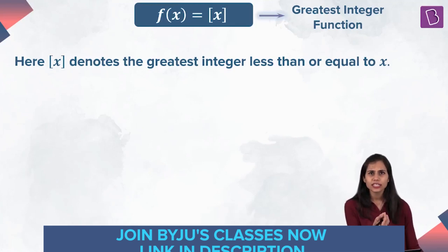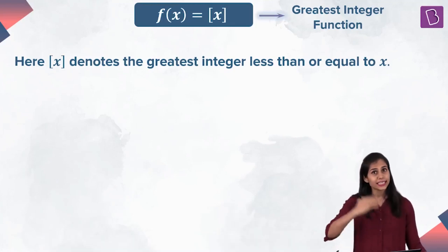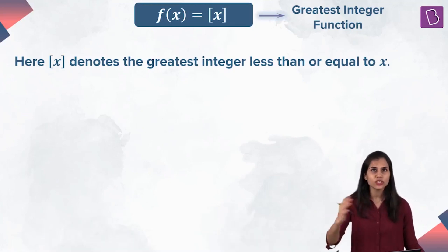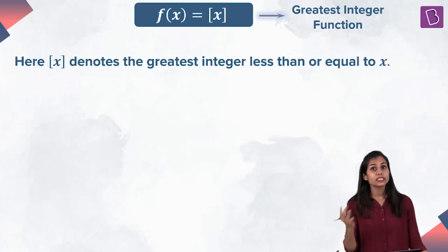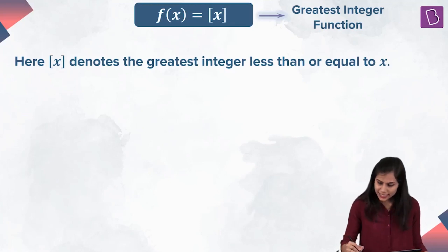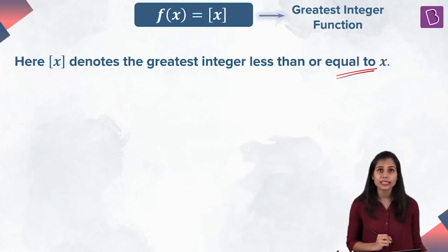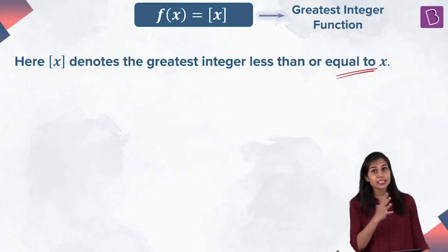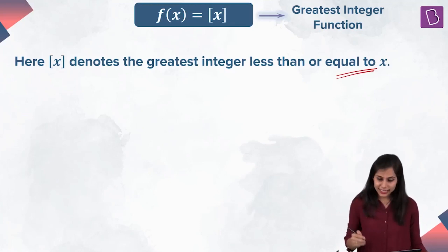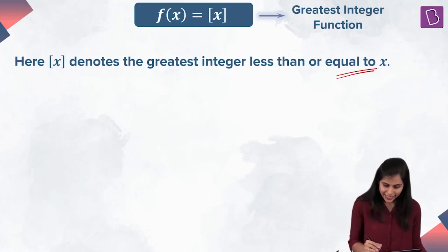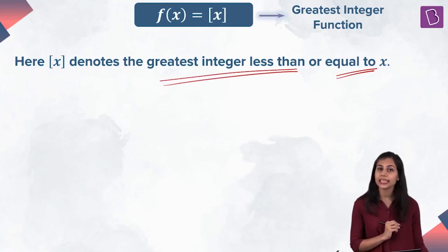Now x, if it is any real number, it can either be an integer or not be an integer. If x is an integer, then bracket x is equal to x. If x is not an integer, then bracket x is the greatest integer strictly less than x.